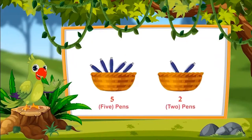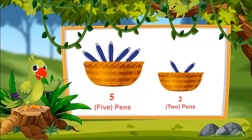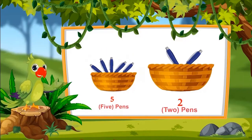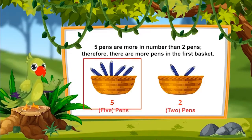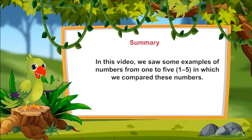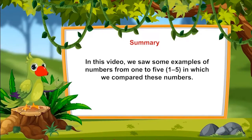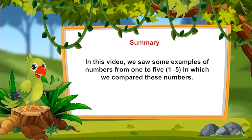Tell me: which basket has more pens — the first basket containing 5 pens or the second containing 2 pens? Absolutely correct. Five pens are more in number than two pens, so the first basket has more pens. So children, that was all for today. In this video, we saw some examples of numbers from 1 to 5 in which we compared these numbers.